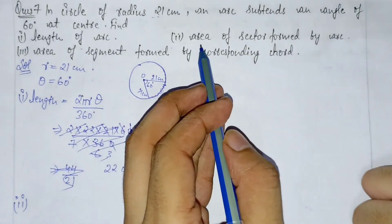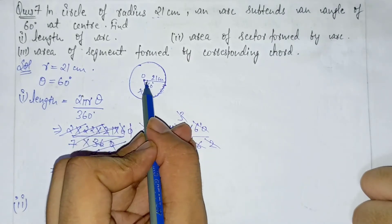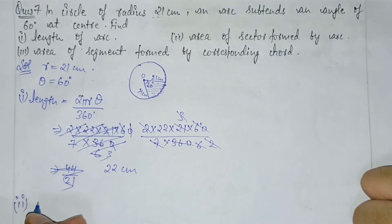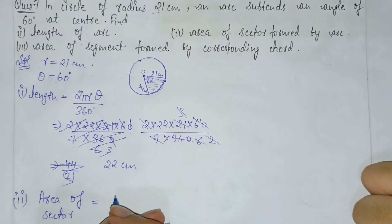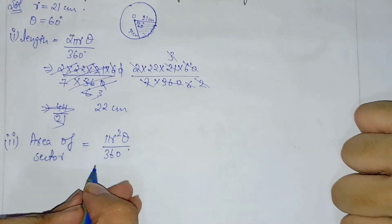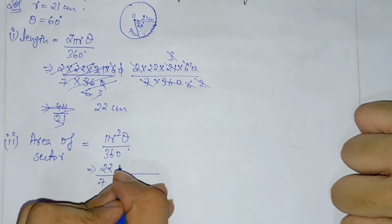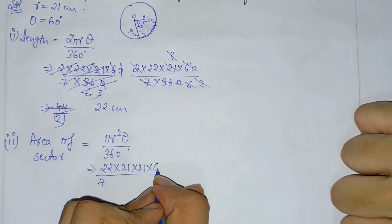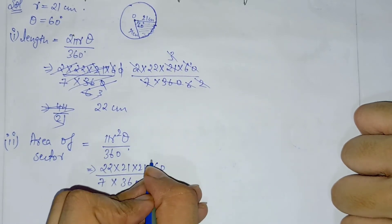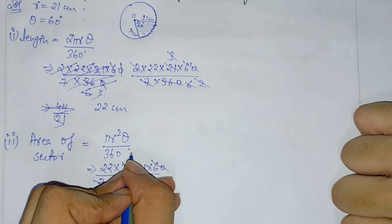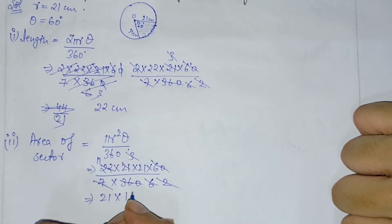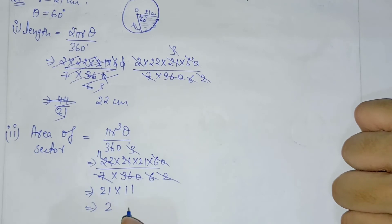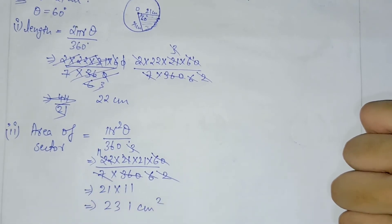Second part: area of the sector formed by the arc. Area of sector = πr²θ/360 = (22/7) × 21² × (60/360). After cancellation: 21 × 11 = 231 cm². So the area of the sector is 231 cm². Third part: area of the segment formed by the corresponding chord.